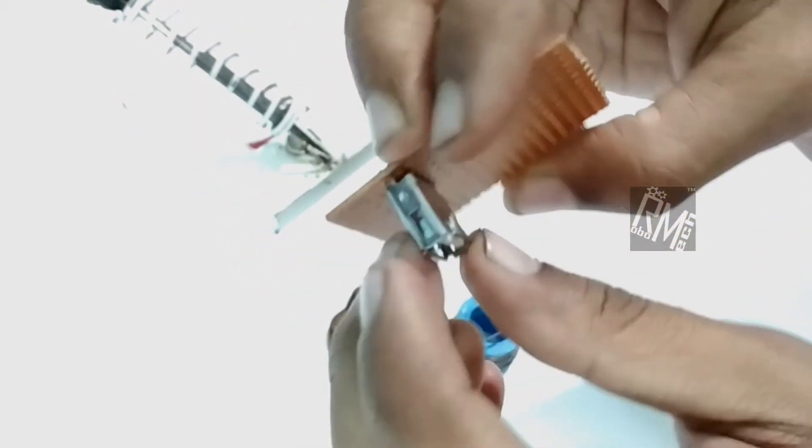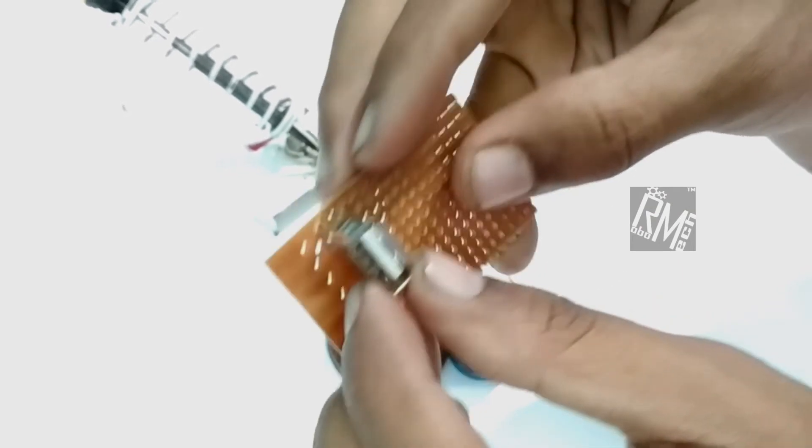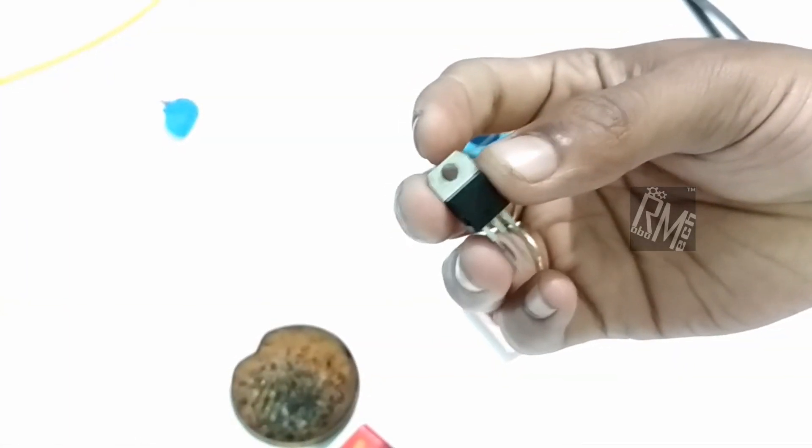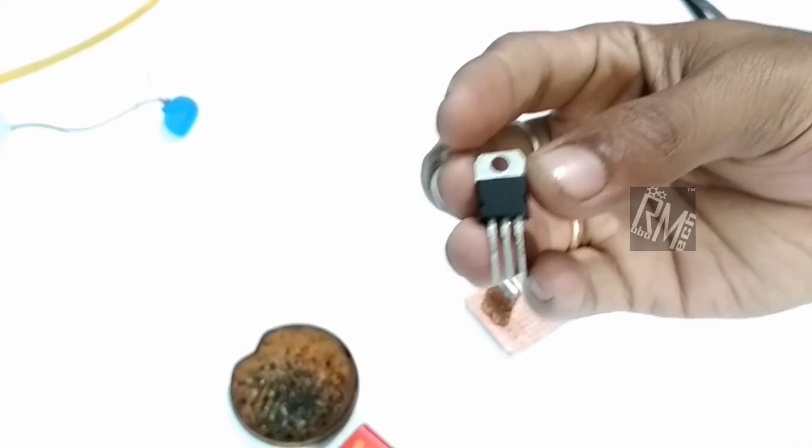You can see how snugly it is sticking to the board. The next part we need is this LM7805 voltage regulator. You can find this anywhere in local electronics stores.